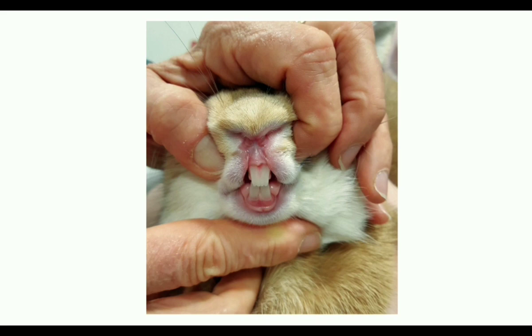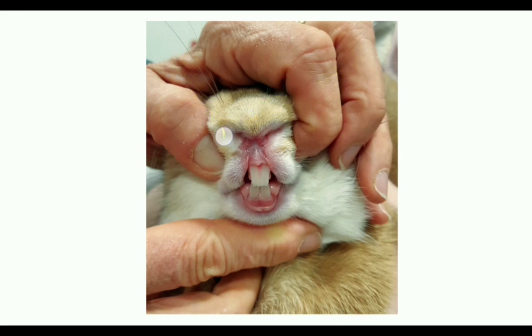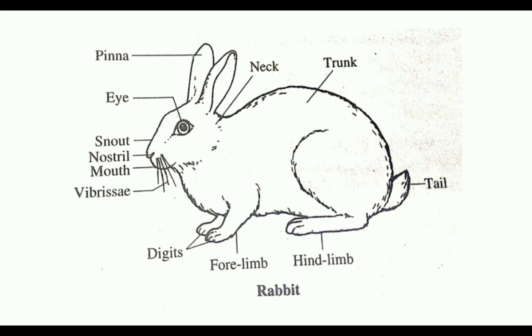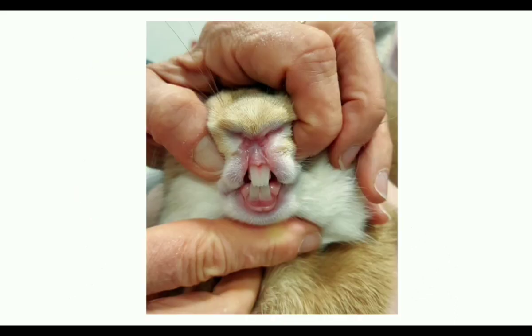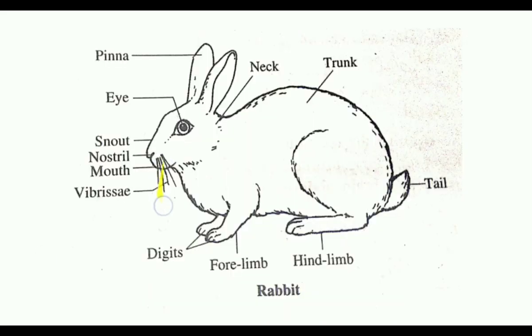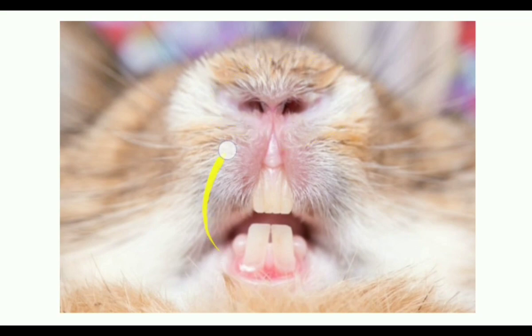There are several long, stiff and tactile hairs on the sides of the upper lip, and these are called vibrissae. The nostrils are located above the mouth.